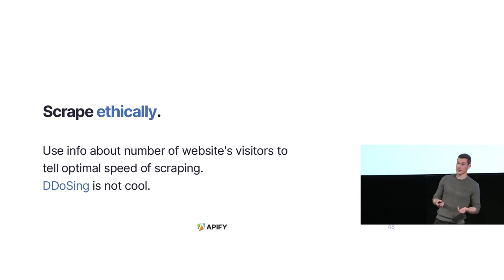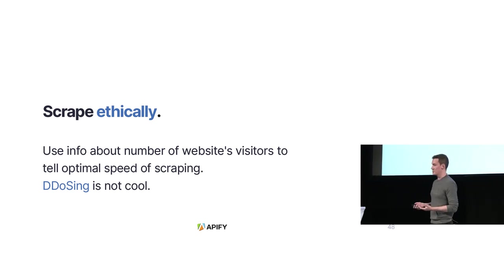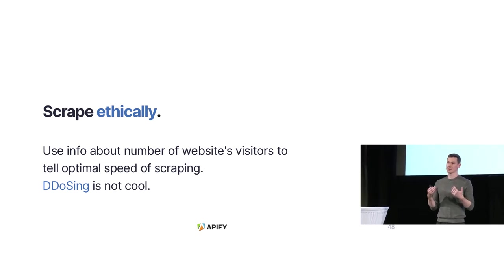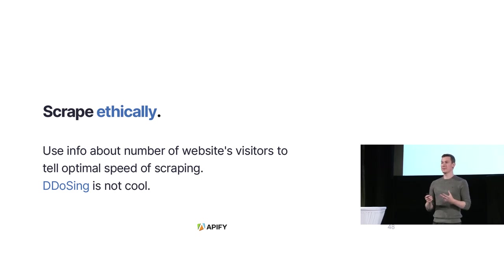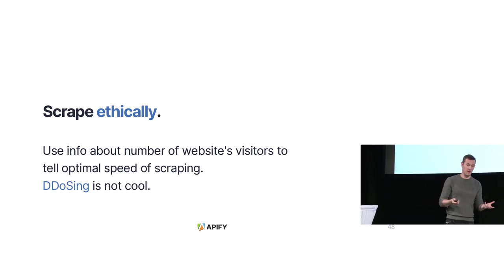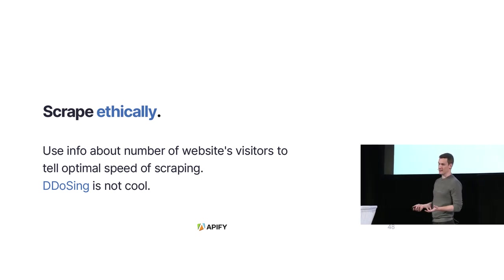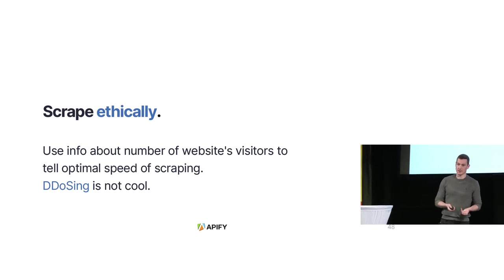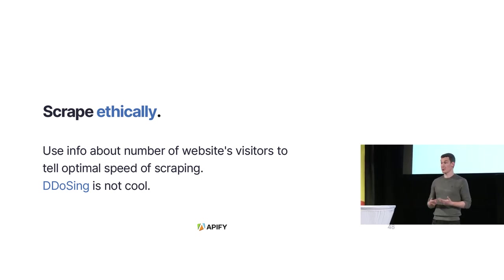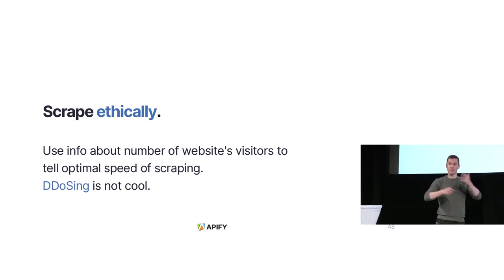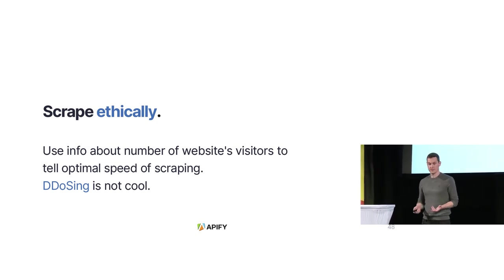Finally, you should always scrape ethically. When we scrape, we think about the website we're scraping — are we doing harm? It's different when you scrape 10 million pages from Amazon, which barely notices, versus scraping a million pages from a website with only 1,000 monthly visitors. You need to check this and be sure what you're scraping is okay. For example, scraping millions of profiles from Facebook is not okay — it's even illegal. But there are ways to scrape ethically, and you should think about it.